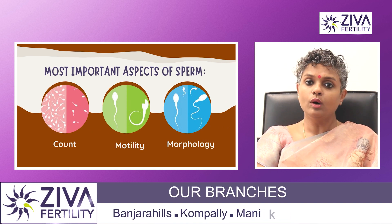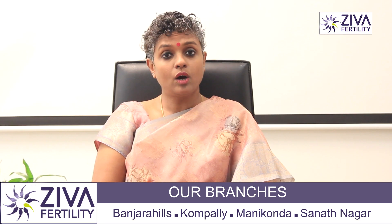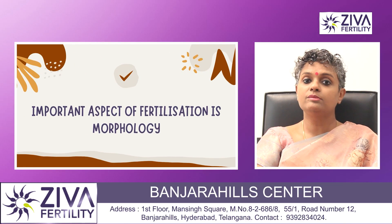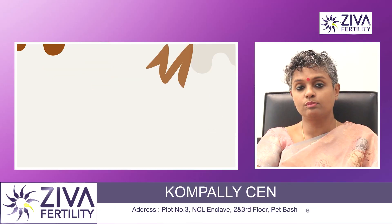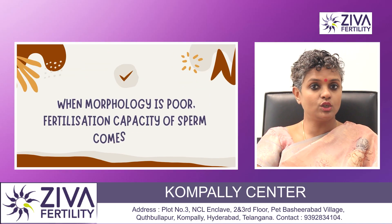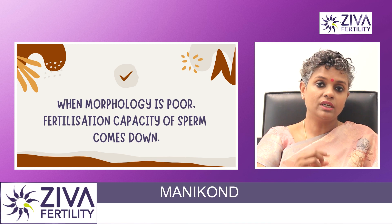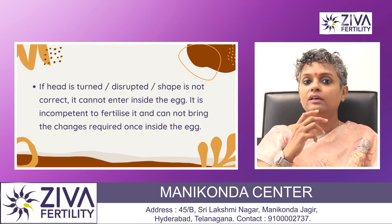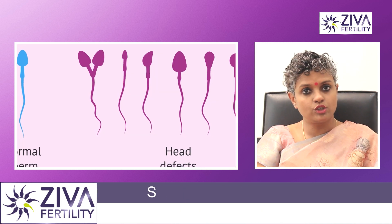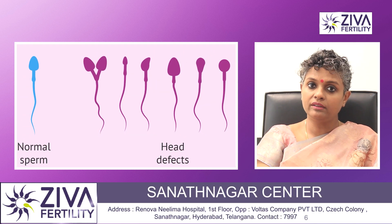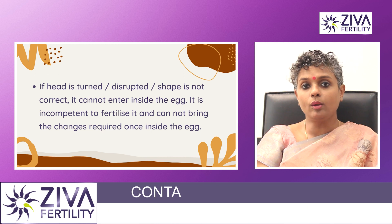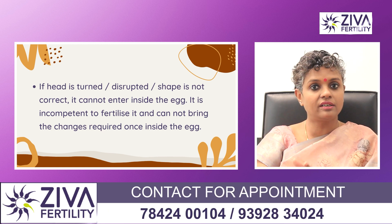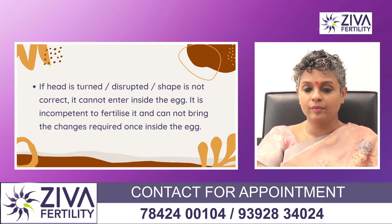Today we will talk about morphology. Morphology has been proven to be a very important aspect of fertilization. It has been proven that when the morphology is poor, the fertilization capacity of the sperm comes down. If the head is turned or disrupted or if the shape is not what it should be, then the sperm cannot enter the egg and it is incompetent to fertilize it, because it cannot bring about the changes required once it is inside the egg.